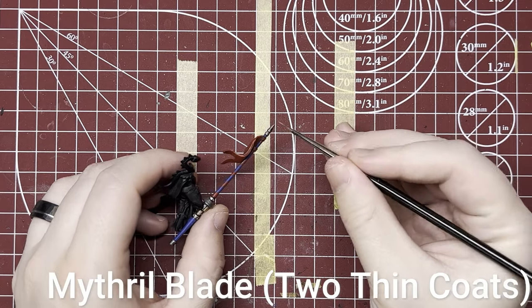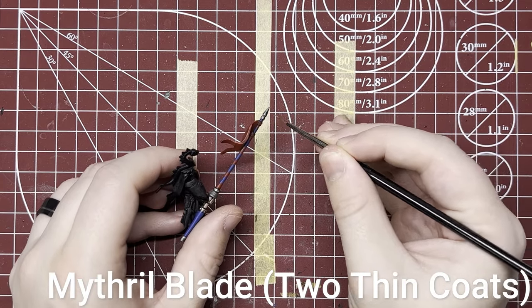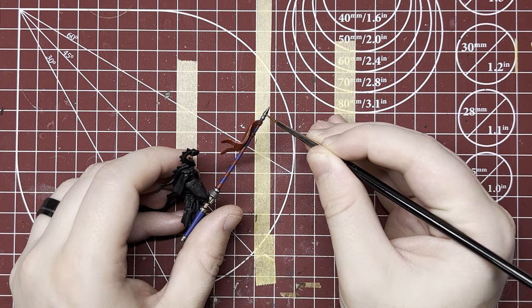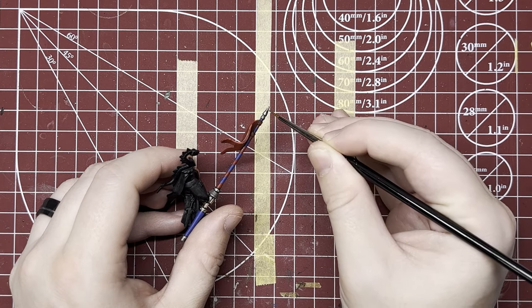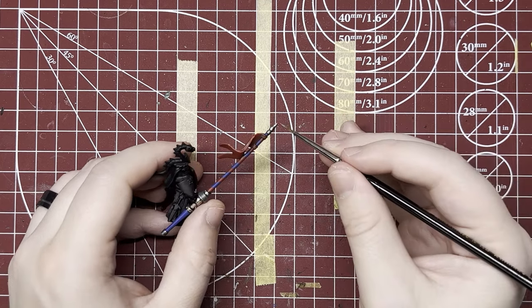Now we're just going to take our brightest metallic and using the side of a very small brush, we're going to just rub it back and forth on spots where we think that spear point or lance point would reflect sunlight.